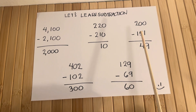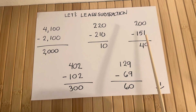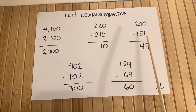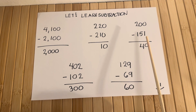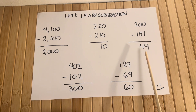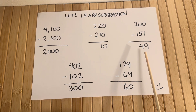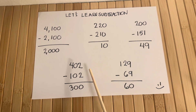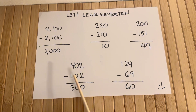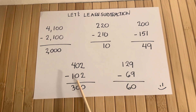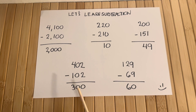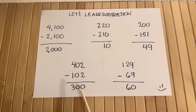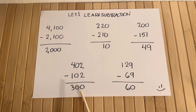Two hundred minus one hundred fifty-one is equals to forty-nine. Four hundred two minus one hundred two is equals to three hundred.